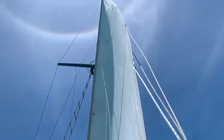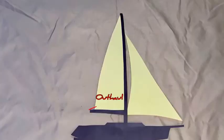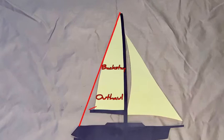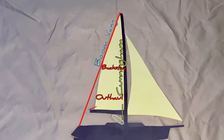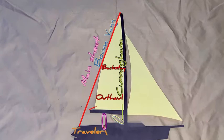In summary: the outhaul flattens the foot of the sail, the backstay flattens the middle section of the sail, the Cunningham moves the draft forward, the boom vang controls the twist in the sail, the traveler controls the angle of attack, and the mainsheet controls both the twist and the angle of attack.